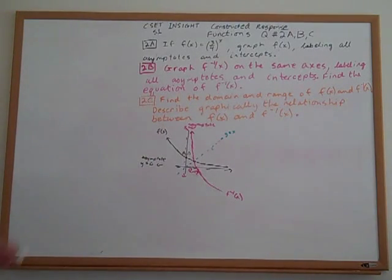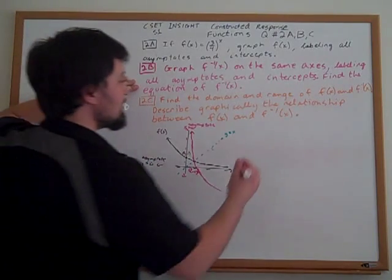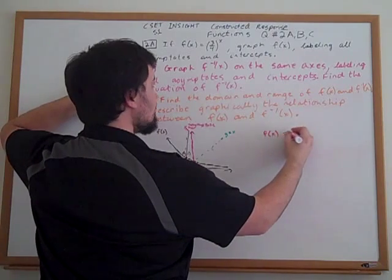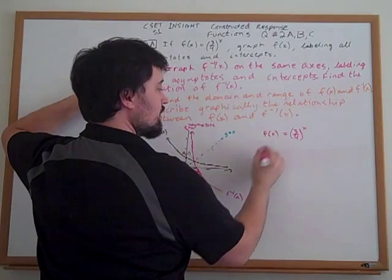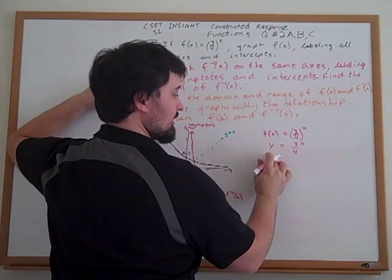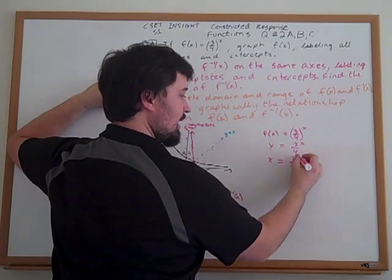Alright. So find the equation of f inverse. Let's go ahead and do that. Remember, any time we have a function and we want to find its inverse, we want to think about this just being y and we flip the positions on x and y. So once we flip x and y, we get this. We want to get y by itself.